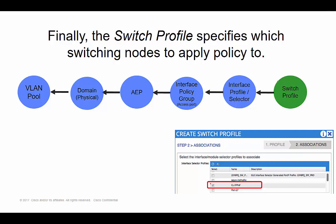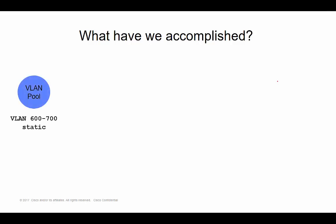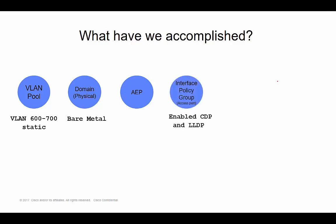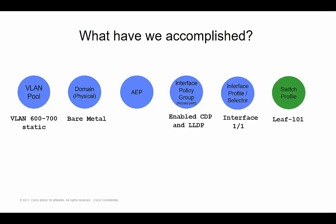We did the six steps. Let's recap on what we've done here. We created VLANs 600 through 700 as a static range to use for bare metal servers, so we created a physical domain. We created an AEP in step three. Step four, we configured our interfaces via an access port policy group — we enabled CDP and LLDP under the interface. We applied that config to interface 1/1, and more specifically, to LEAF 101 interface 1/1. These are the six steps.